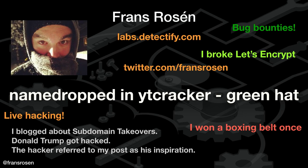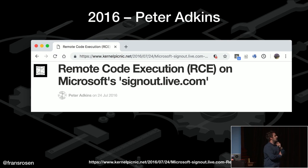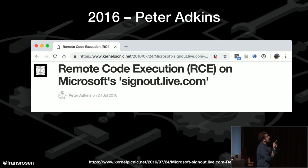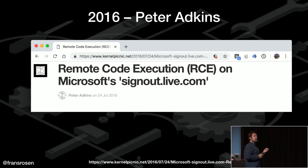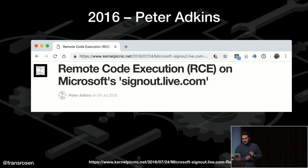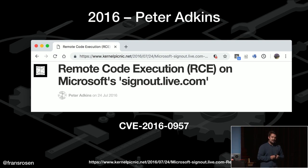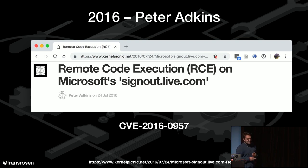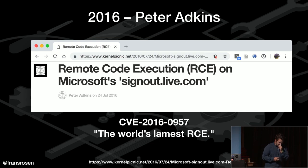This story begins in 2016. I read a blog post from a guy called Peter Adkins, who wrote about remote code execution on signin.live.com, which is an endpoint for Microsoft. What's interesting is he goes through a specific CMS called Adobe Experience Manager, or AEM. The way he actually got remote code execution was due to a vulnerability called CVE-2016-0957 — he actually calls it 'the world's lamest RCE,' and it kind of makes sense.